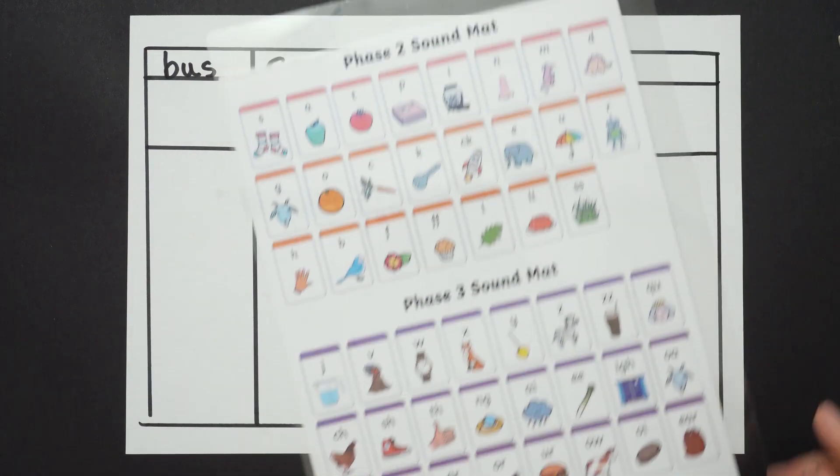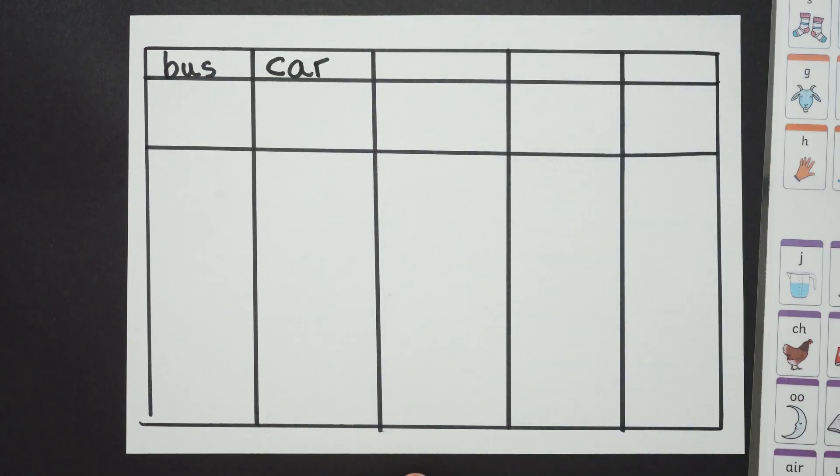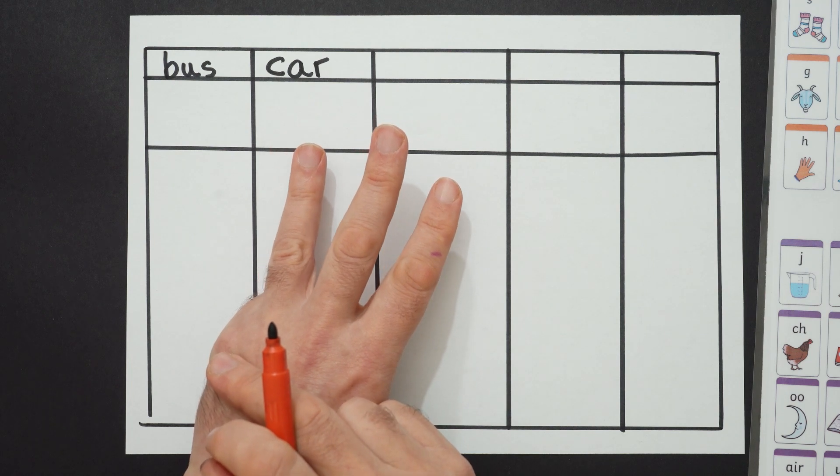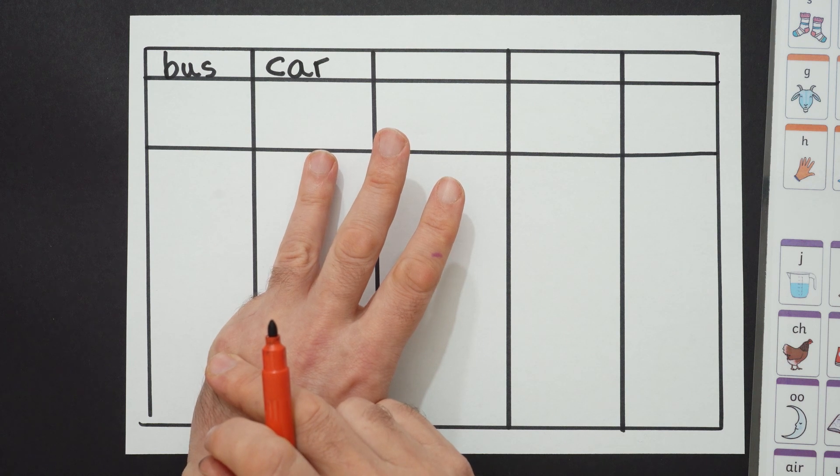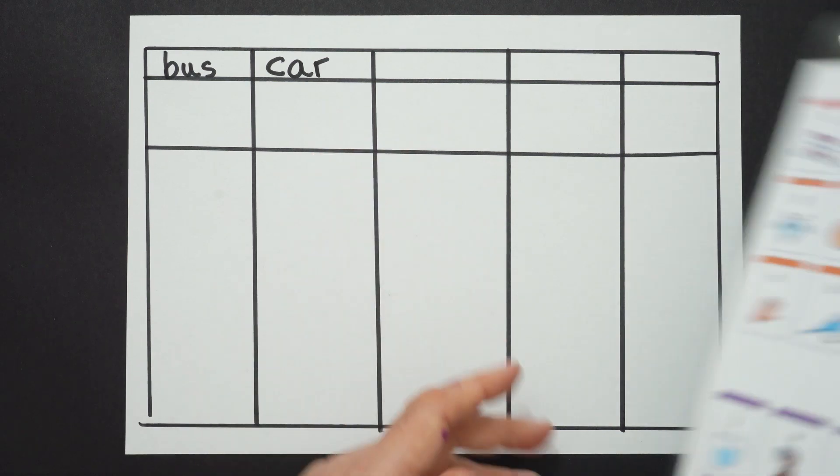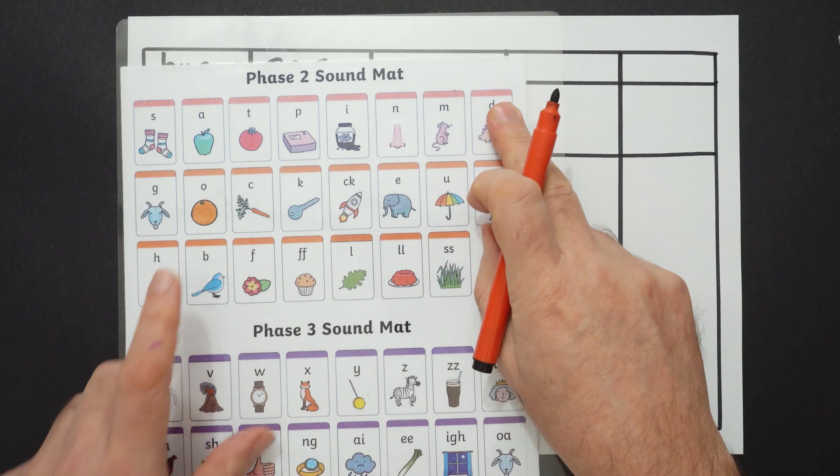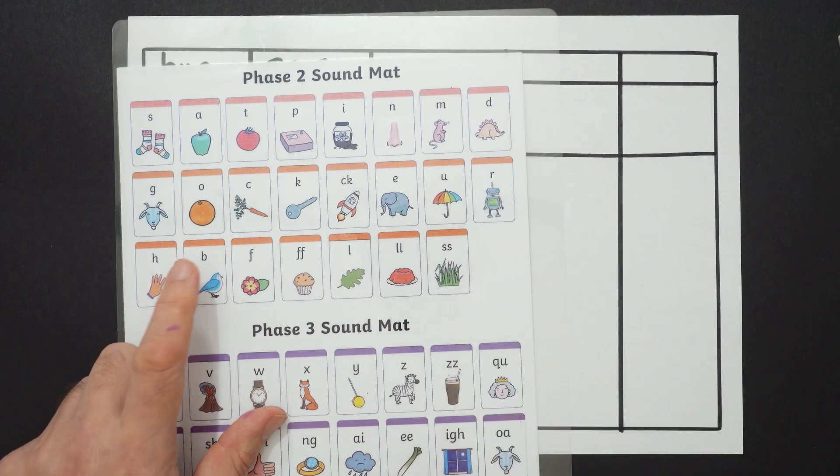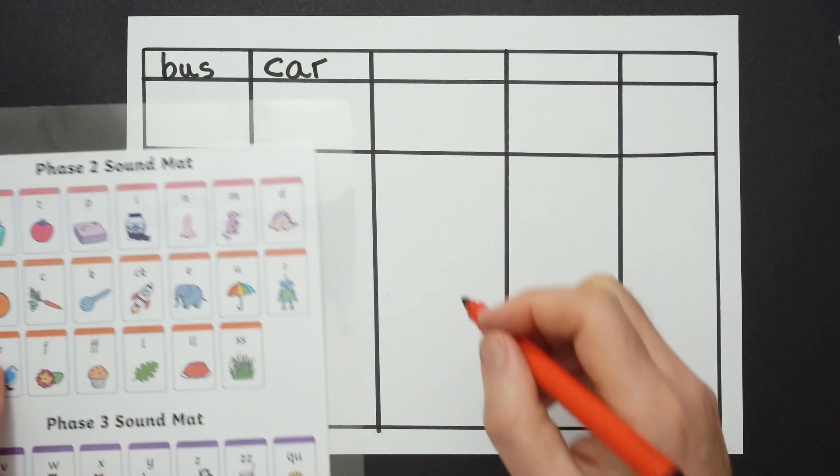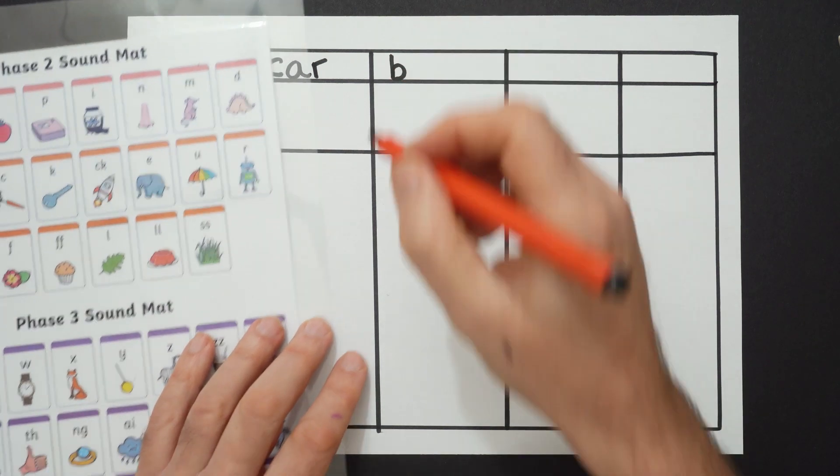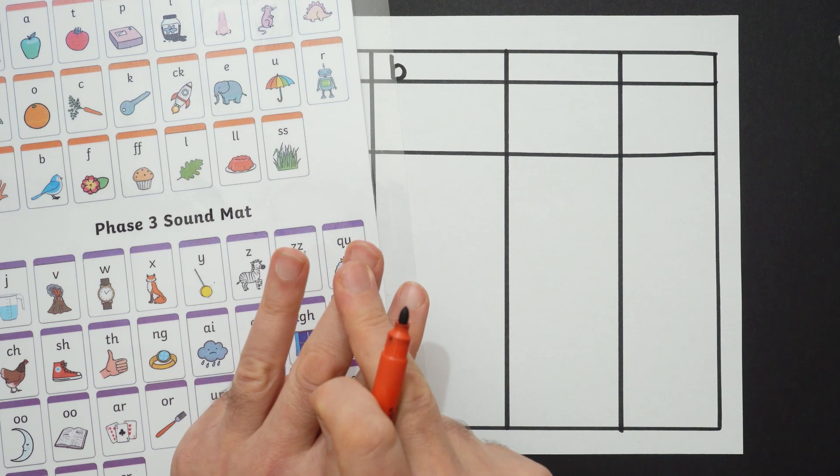Bus, car. Let me think of another one. Bike. Can you sound out bike for me? Three sounds in bike. What's the first sign in bike? Bin, bat. Is it S, B, B, B? Okay. My B sound. Where's my B sound? Is it this one or this one? Dinosaur or bird? Bird, isn't it. What's my next sound? Bike, B, I.